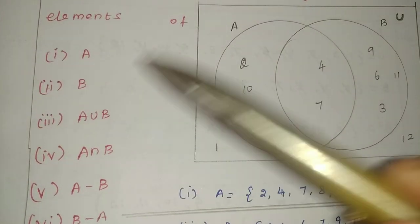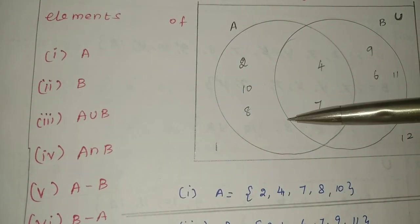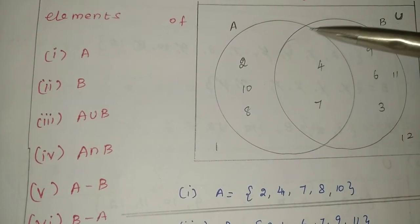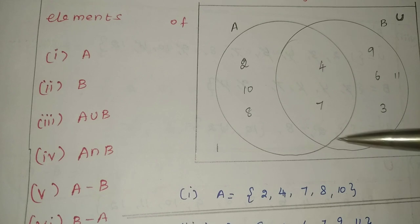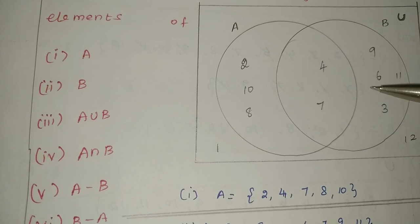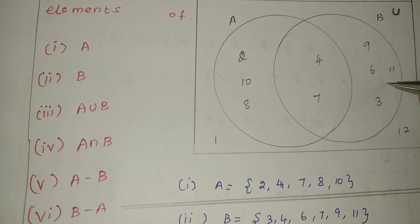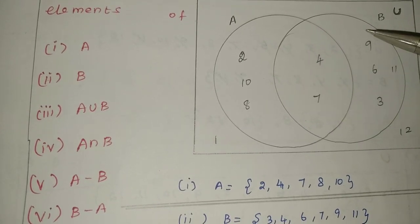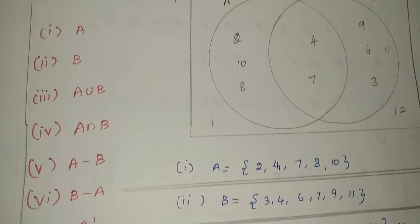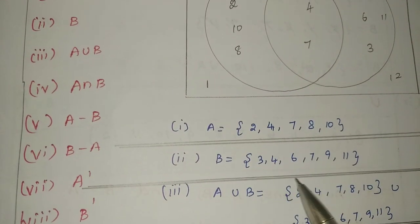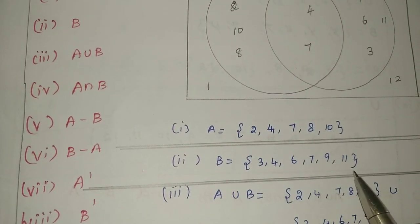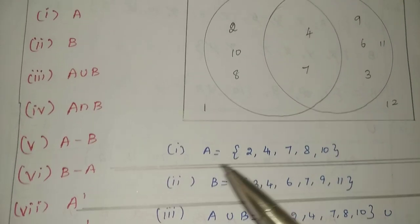Next, we get B. B is not the A circle — the full circle B. Looking at the values in order: 3, 4, 6, 7, 9, 11. So B is equal to {3, 4, 6, 7, 9, 11}.